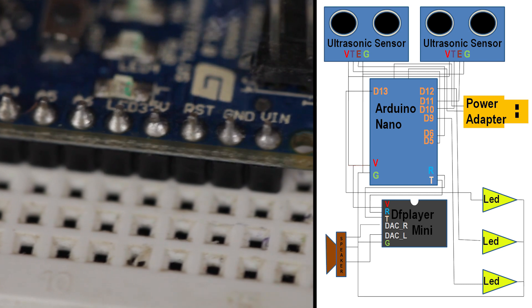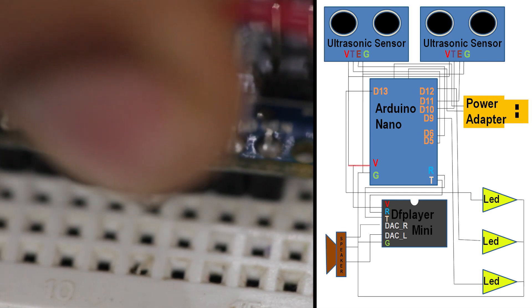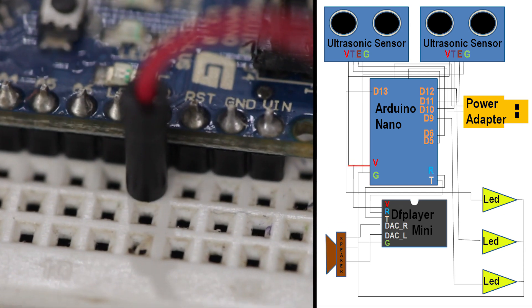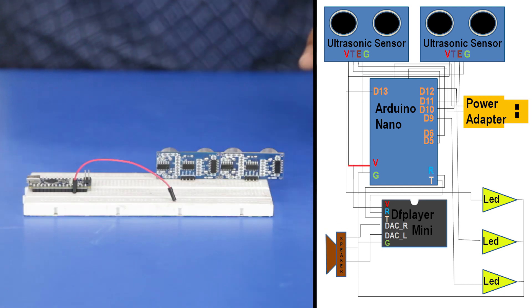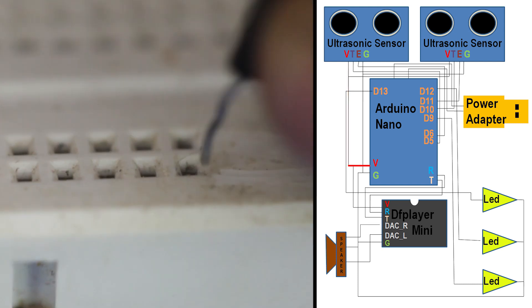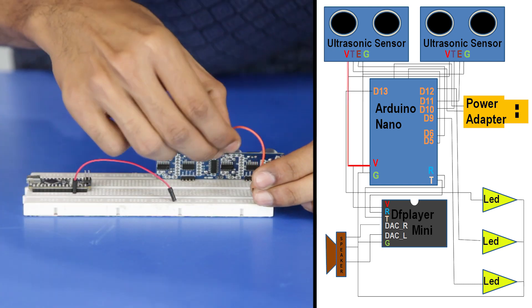Plug in a jumper cable from Arduino 5V to the first rail of breadboard. Connect 5V power to the two ultrasonic sensors.